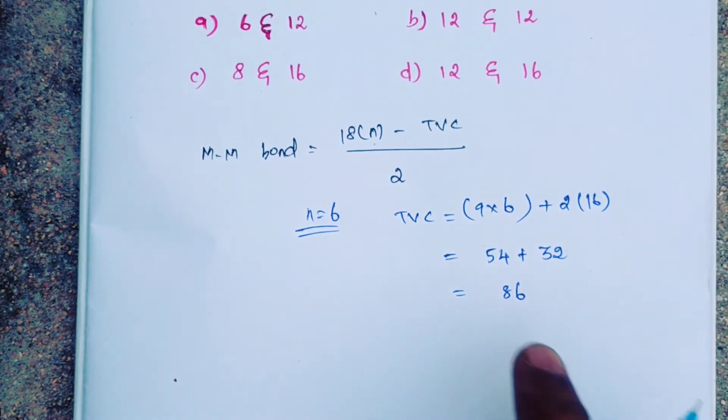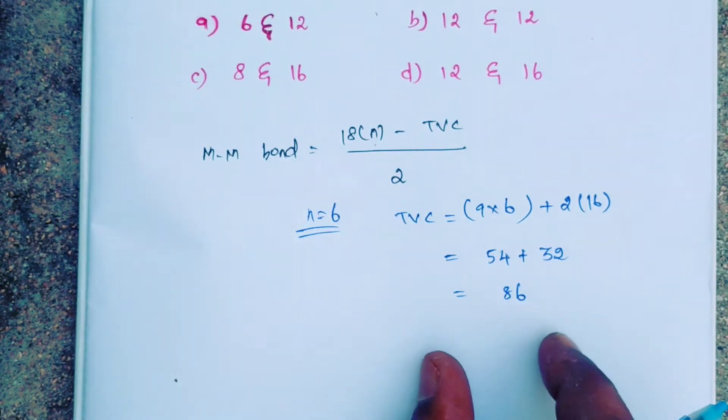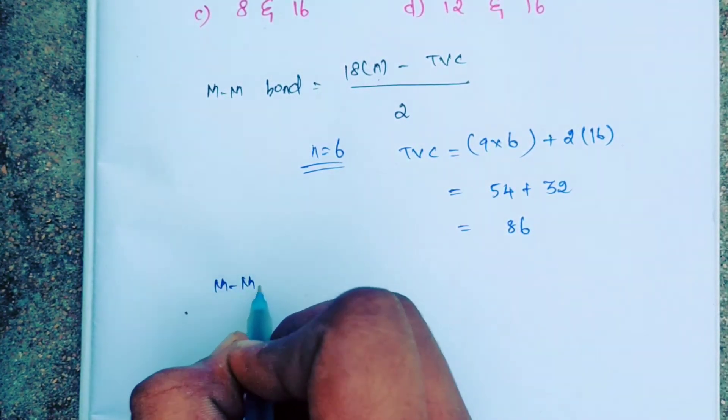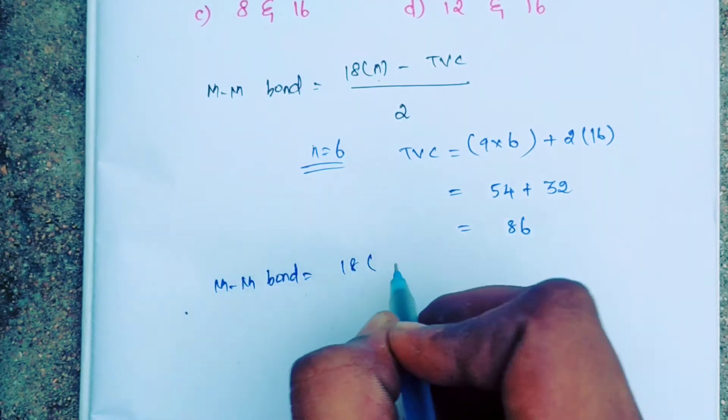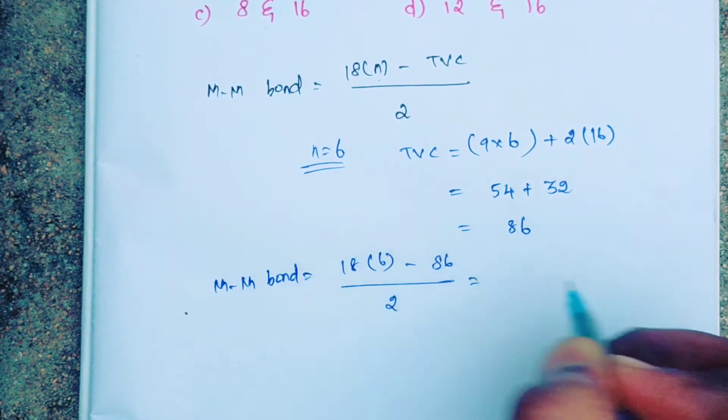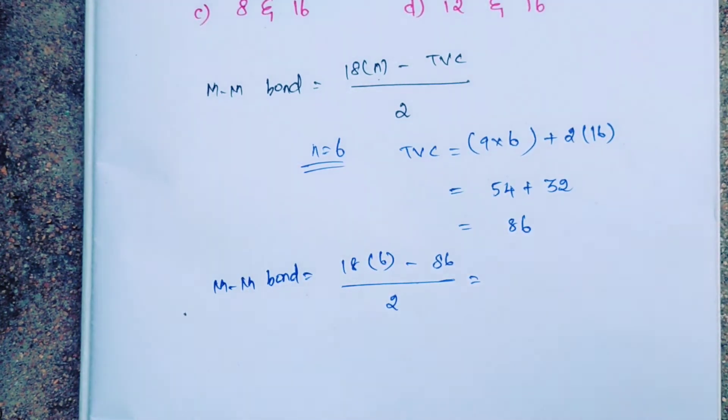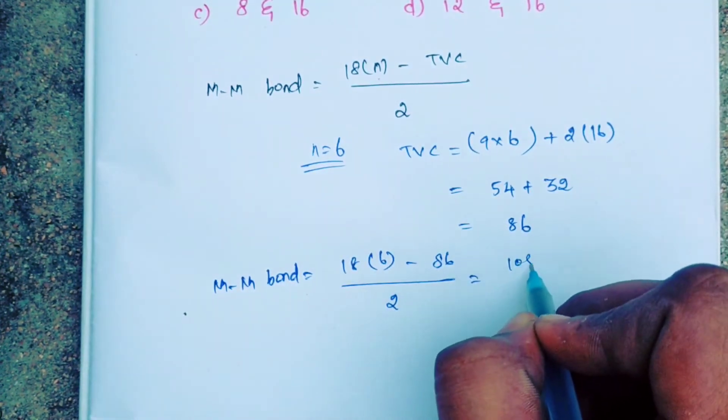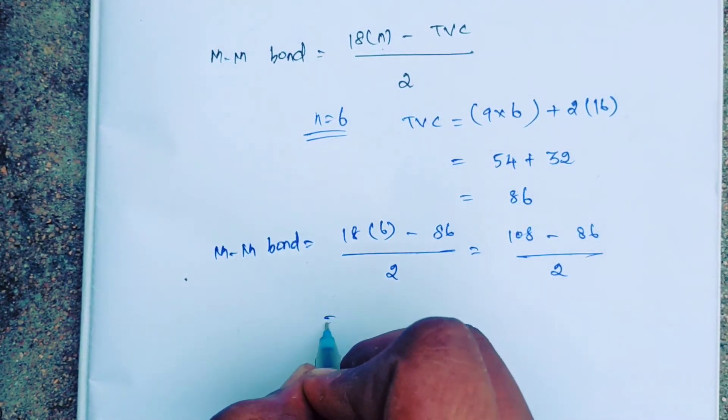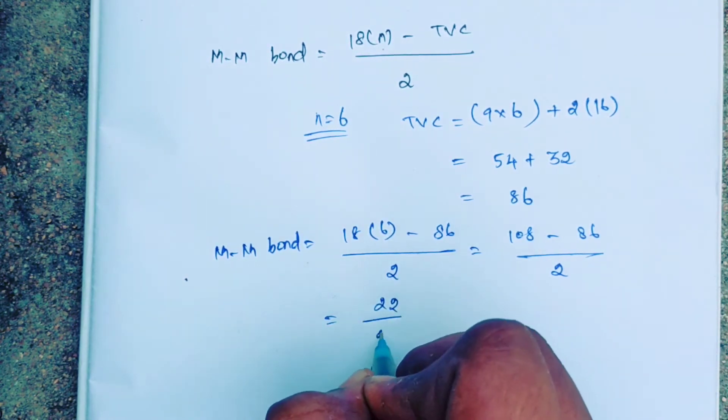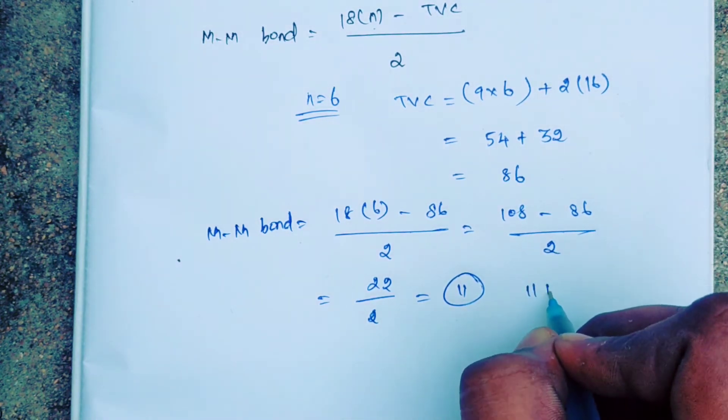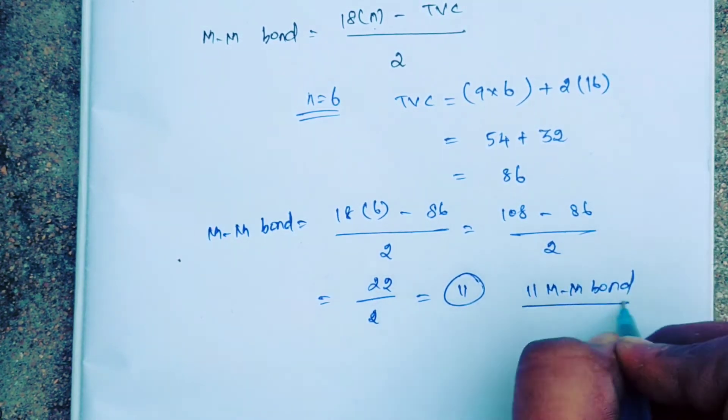Now we substitute the values in the formula. Metal-to-metal bonds equals 18 times 6 minus 86 divided by 2. We get 108 minus 86 divided by 2, which equals 22 divided by 2. So we get 11 metal-to-metal bonds.